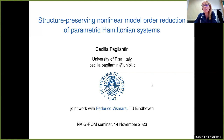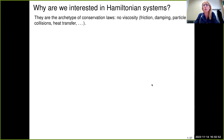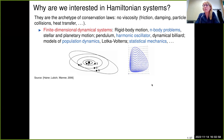My talk today is based on joint work with PhD student Federico Bismarra. The topic is trying to come up with reduced-order models for Hamiltonian systems. The reason we are interested in Hamiltonian systems is that under the framework of Hamiltonian mechanics we can describe all phenomena with no viscosity — no friction, no damping, no particle collisions, or heat transfer. Examples of finite-dimensional dynamical systems include the n-body problem, stellar and planetary motion, harmonic oscillators, the Lotka-Volterra model, and models from statistical mechanics.